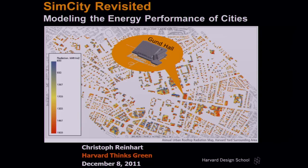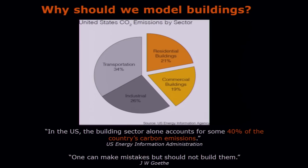Good evening. It's a great pleasure to be here tonight and to talk to you about the idea of why you would want to model the energy performance of buildings and cities before you design them and while the city is being operated and used. So why should we be caring about buildings? Since you are attending this event, I'm sure you're aware that within our overall carbon emission budget, buildings account for roughly 40 percent — and that constitutes a real problem, because once you have an inefficient building stock it takes a really long time to change. With inefficient cars, after five, six, seven, ten years the cars are replaced, but with buildings we are stuck. So I always like to use this quote from Goethe who said: one can make mistakes, but should not build them.